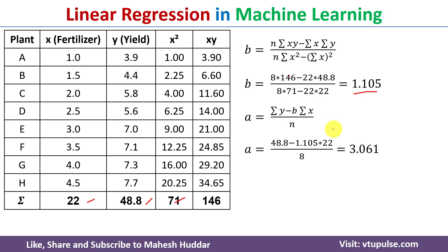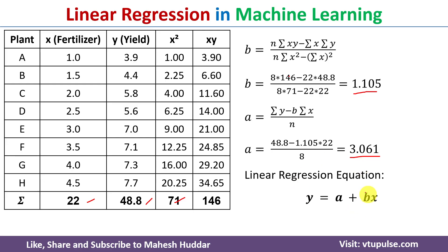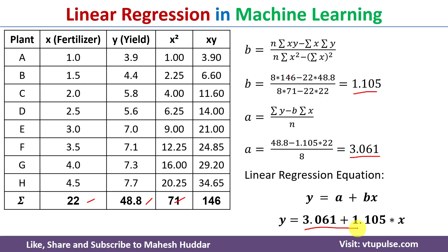Once we find b, we calculate a, which equals summation of y minus b times summation of x, divided by n, giving a equal to 3.061. With both values found, we substitute into the linear regression equation y = a + bx, obtaining y = 3.061 + 1.105x.